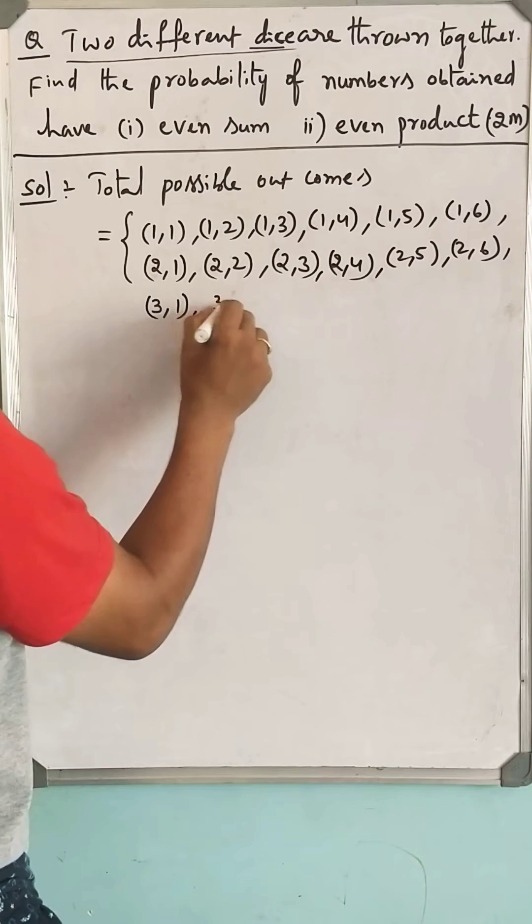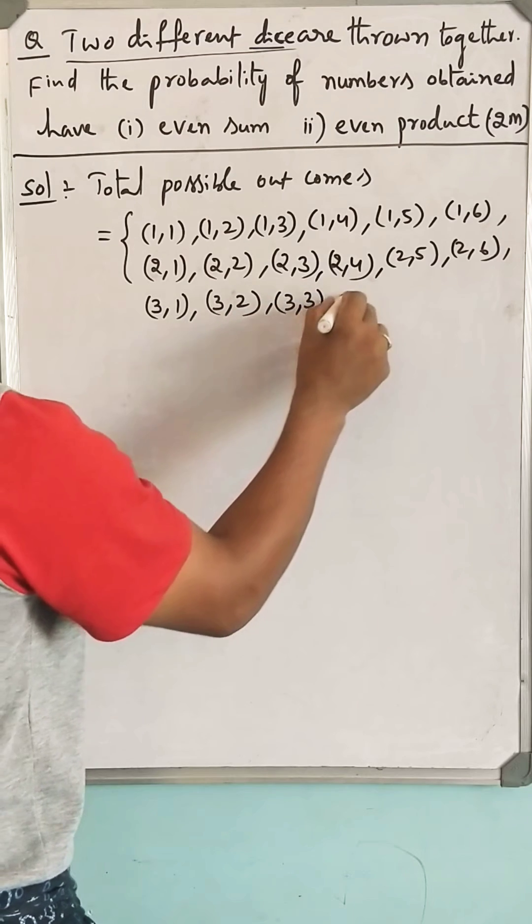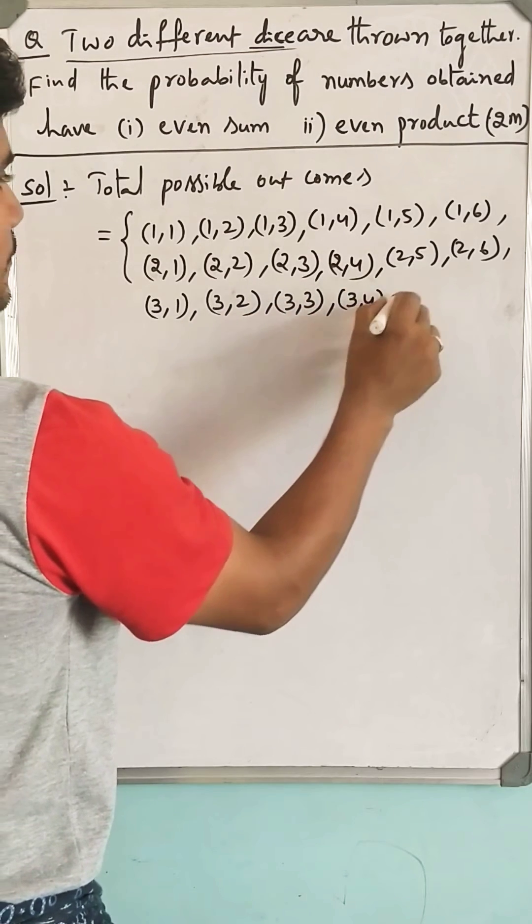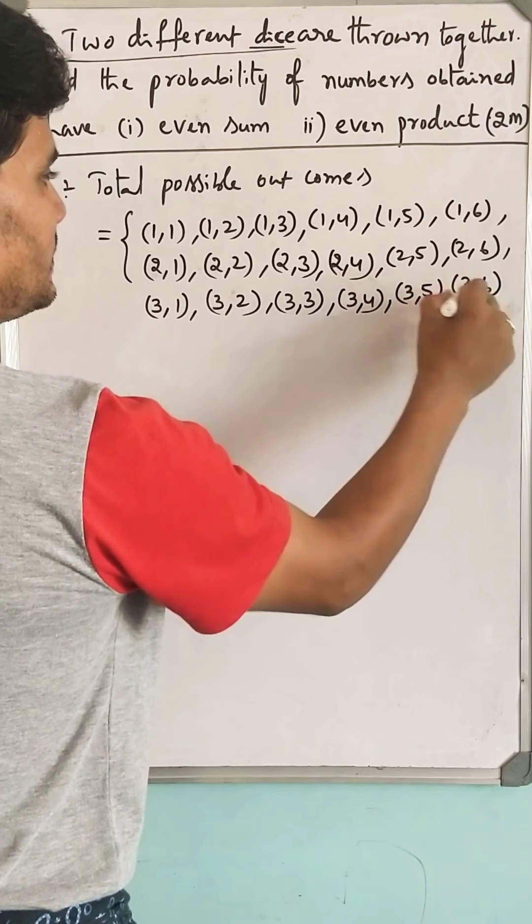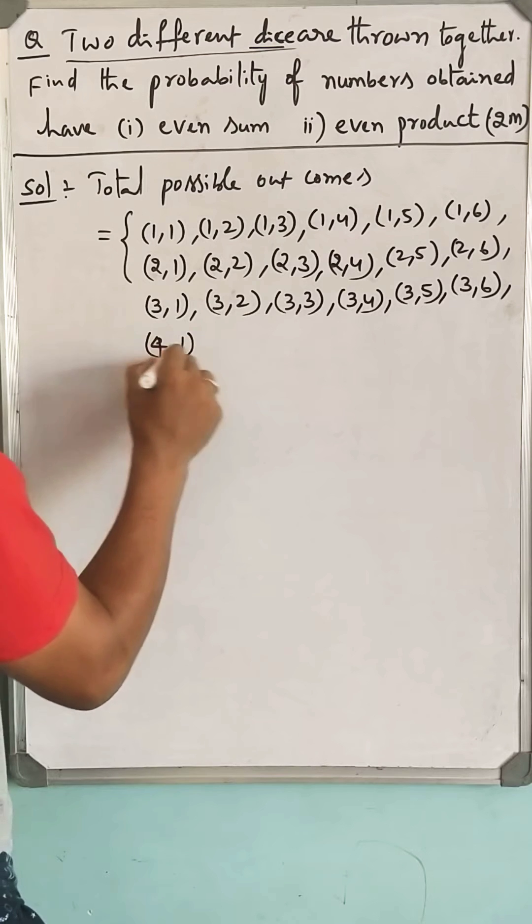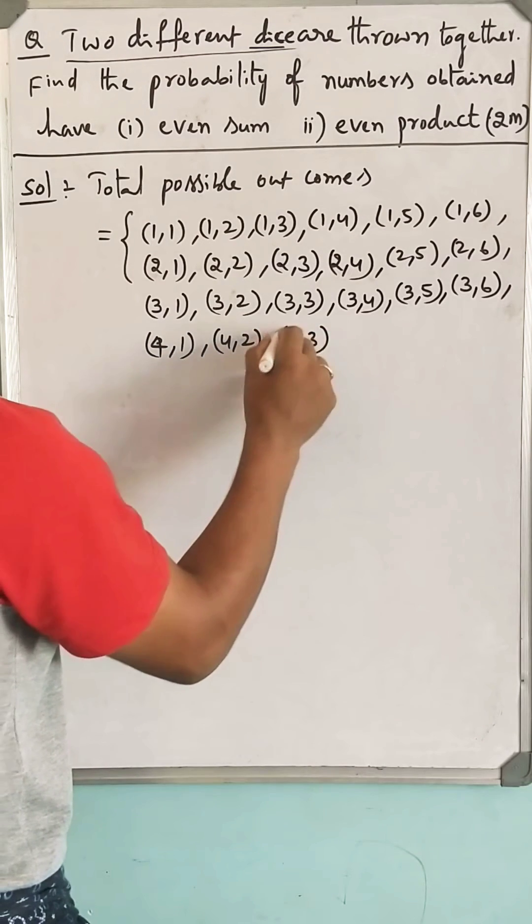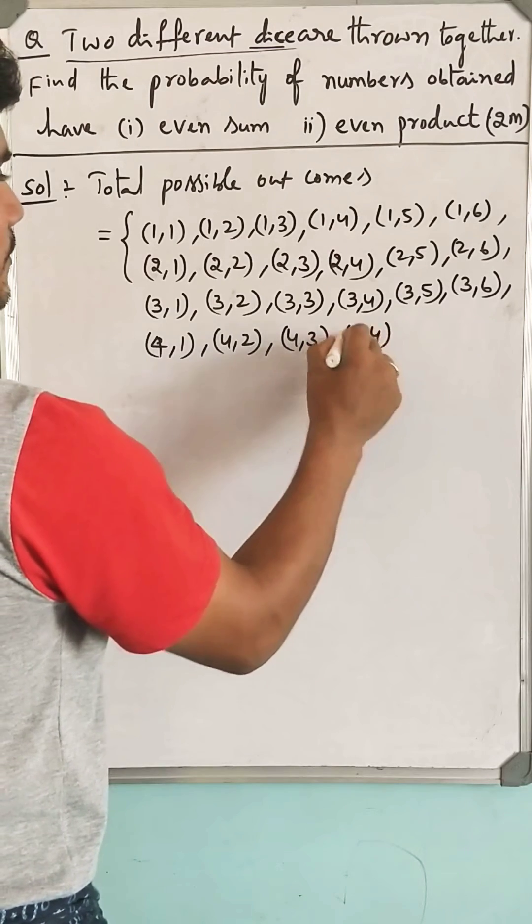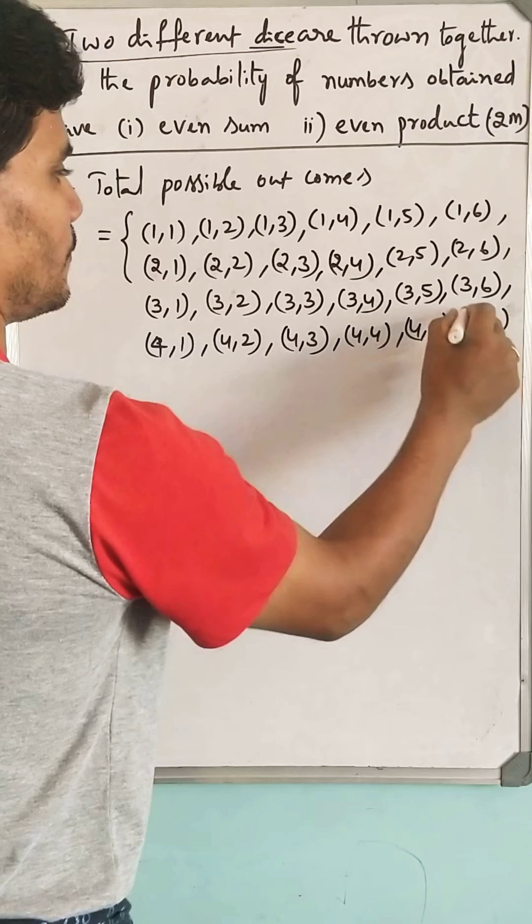(3,1), (3,2), (3,3), (3,4), (3,5), (3,6), (4,1), (4,2), (4,3), (4,4), (4,5), (4,6).